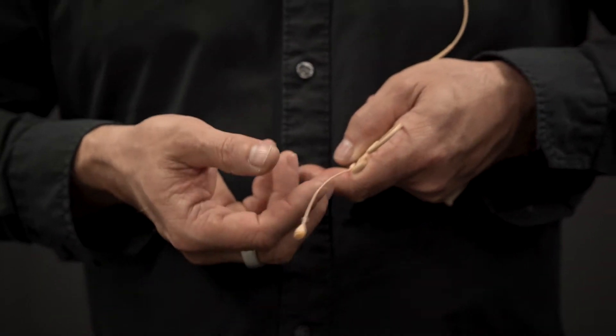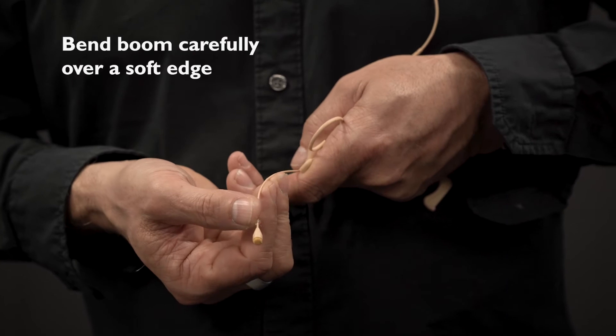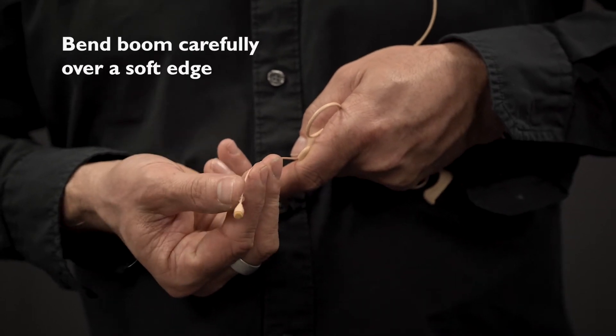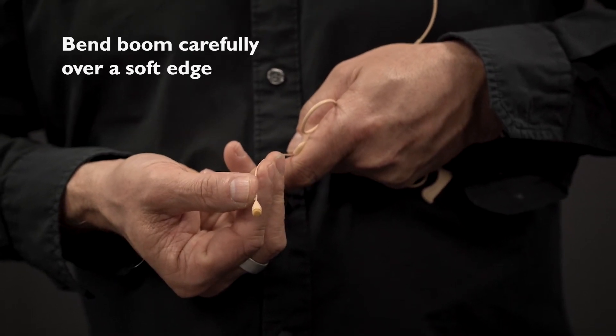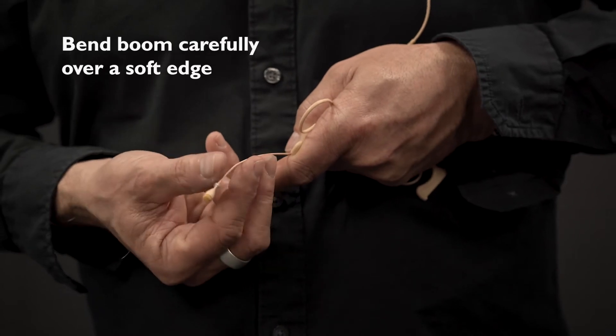If you want to change the curve of the boom, you bend it with at least two fingers. You push it with your thumb and counter hold it with at least two fingers.